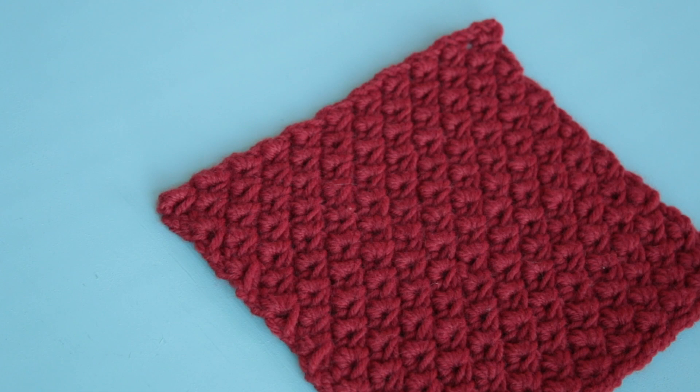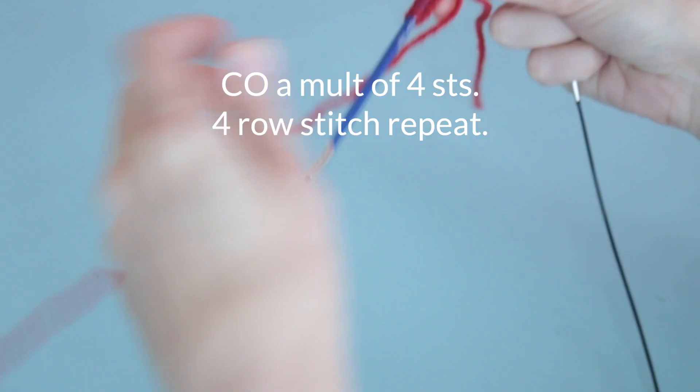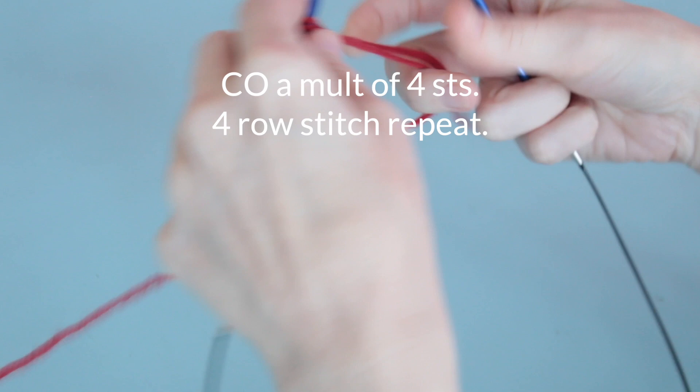Like I said, we are going to work over a multiple of four stitches to accomplish the anemone stitch. The first row of this stitch is a wrong side row, so we're going to have our working yarn towards us to start.